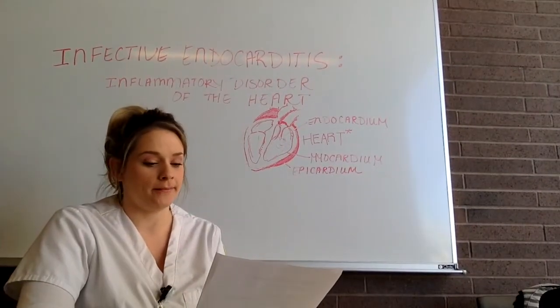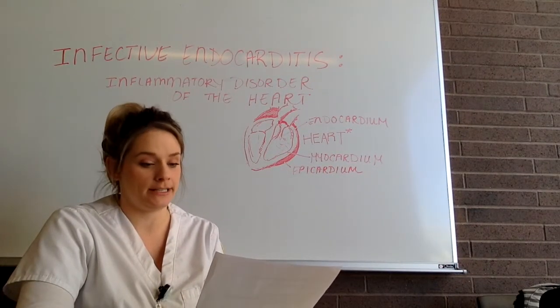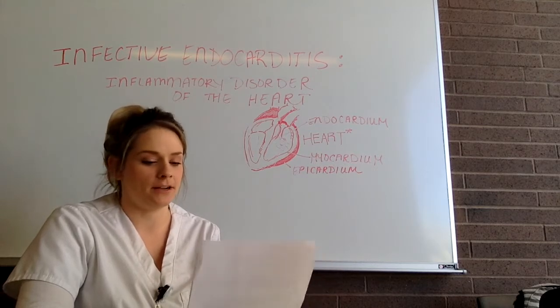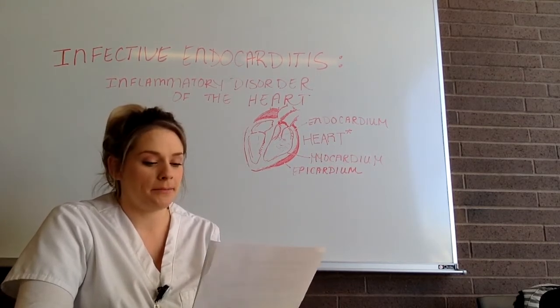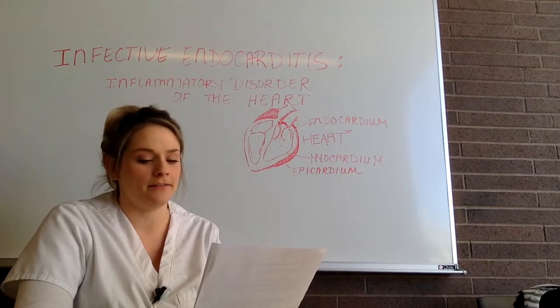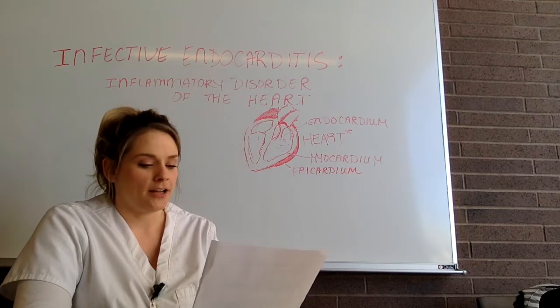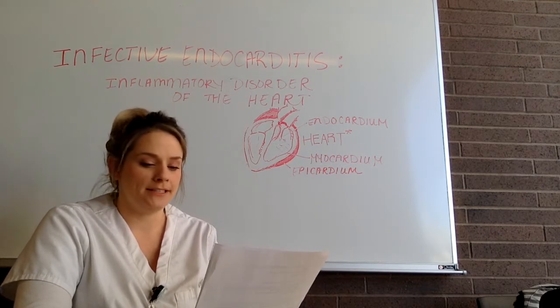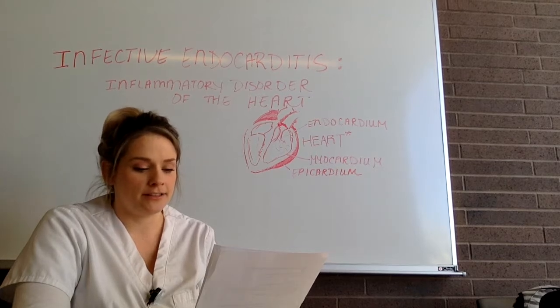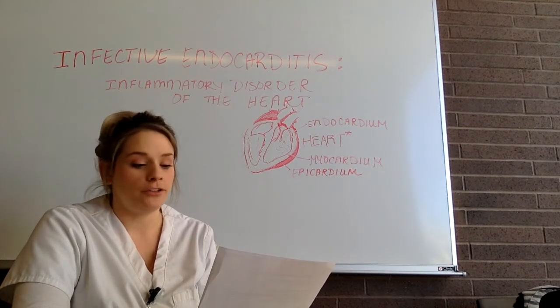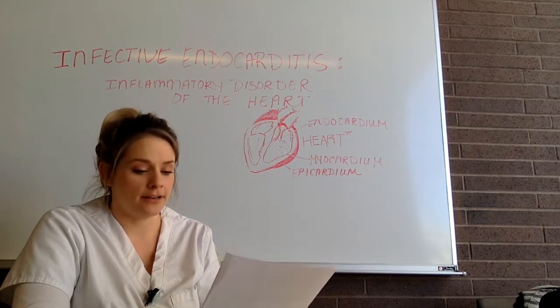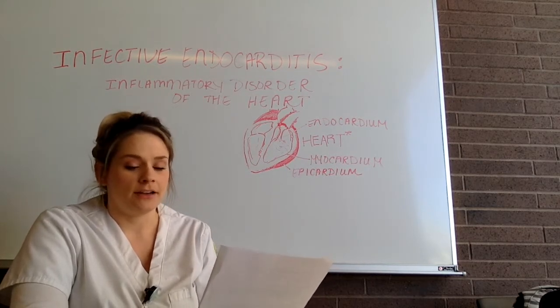So, how do they get infective endocarditis? The most common cause is bacterial, caused by staph or strep. Other possible pathogens include fungi and viruses. IE occurs when blood turbulence within the heart allows the pathogenic organism to infect previously damaged valves or other endothelial surfaces. There are several risk factors — both cardiac and non-cardiac conditions — that can cause IE.